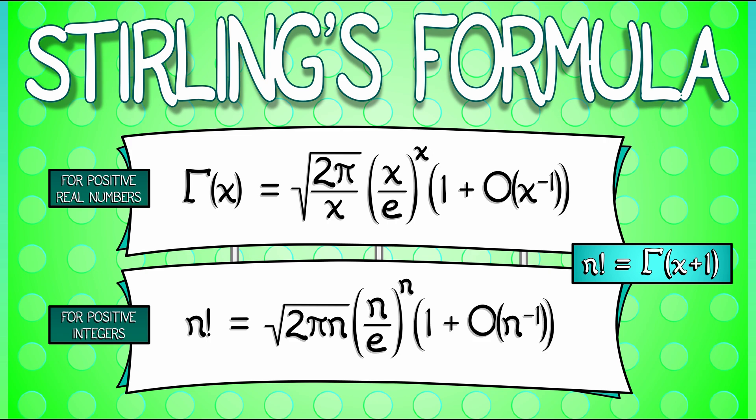Wait a minute, how do you get that? You can take the previous formula for gamma of x, just substitute in x plus 1, and practice your big O manipulation, factoring out constants, simplifying. Now, this latter formula for n factorial winds up being useful in a lot of different contexts.